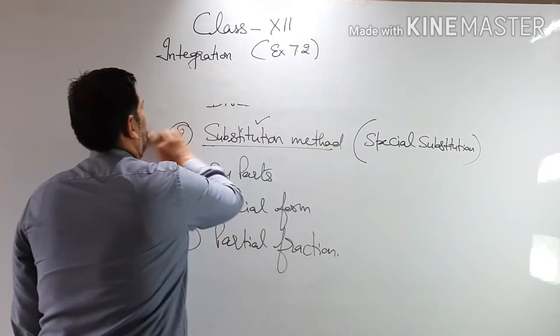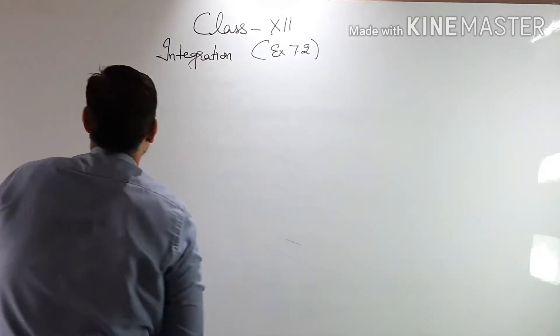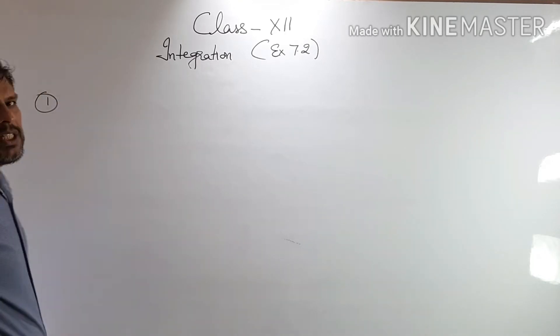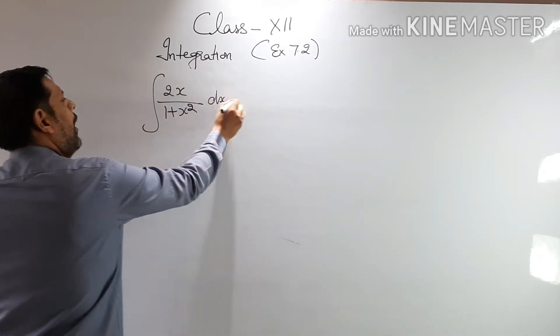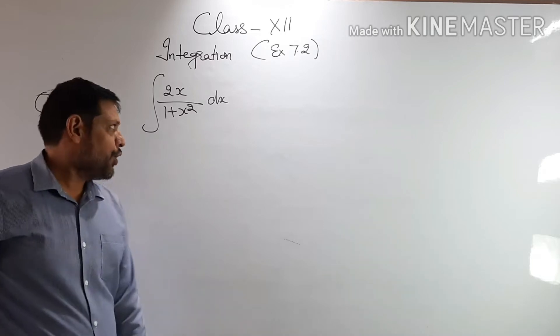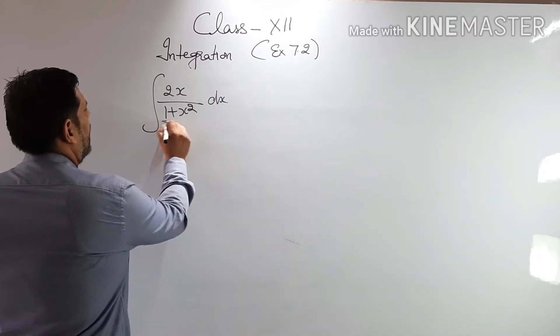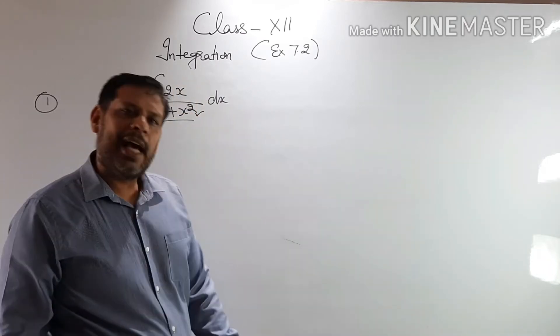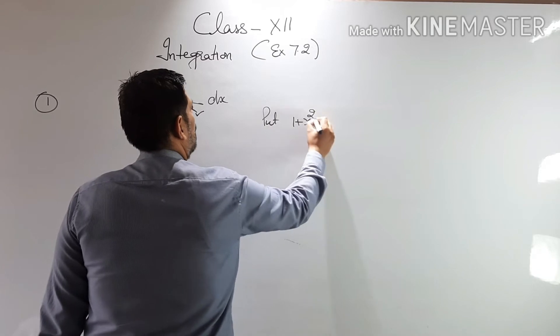So these 5 parts, we will discuss our integration. We have done 7.1. Today we will talk about the substitution method, that is exercise 7.2. So let's start with exercise 7.2. The first question says it is 2x upon 1 plus x square. We have to integrate.